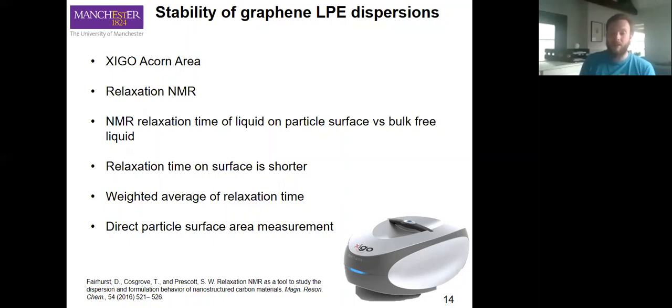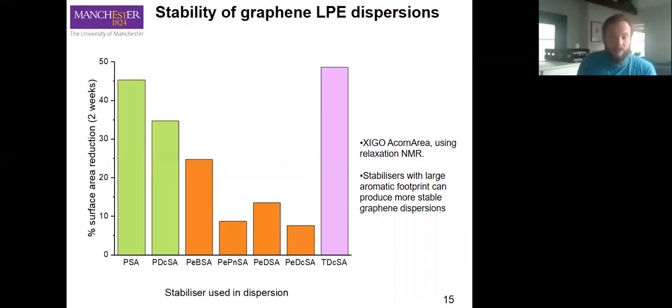It's really useful to measure the surface area of nanoparticles dispersed in the liquid, and we take this over time periods of days to see how stable our dispersions remain. We see over time surface area reduction. You want the minimal surface area reduction here. Stabilizers with large aromatic footprints tend to produce more stable graphene dispersions from what we've seen.